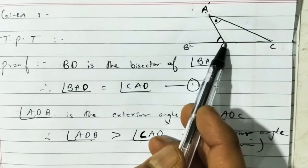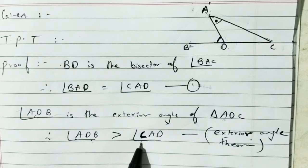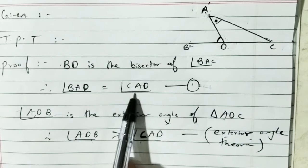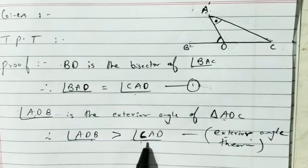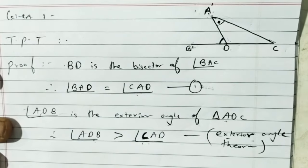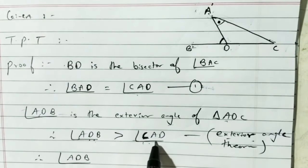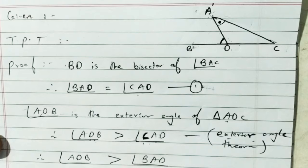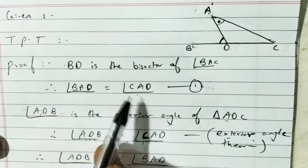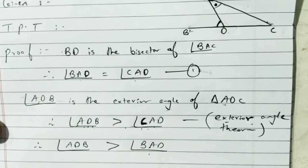Now, angle CAD equals angle BAD (from equation 1). So wherever we have CAD, we can substitute BAD. Therefore angle ADB is greater than angle BAD as well — from equation 1, since CAD equals BAD.